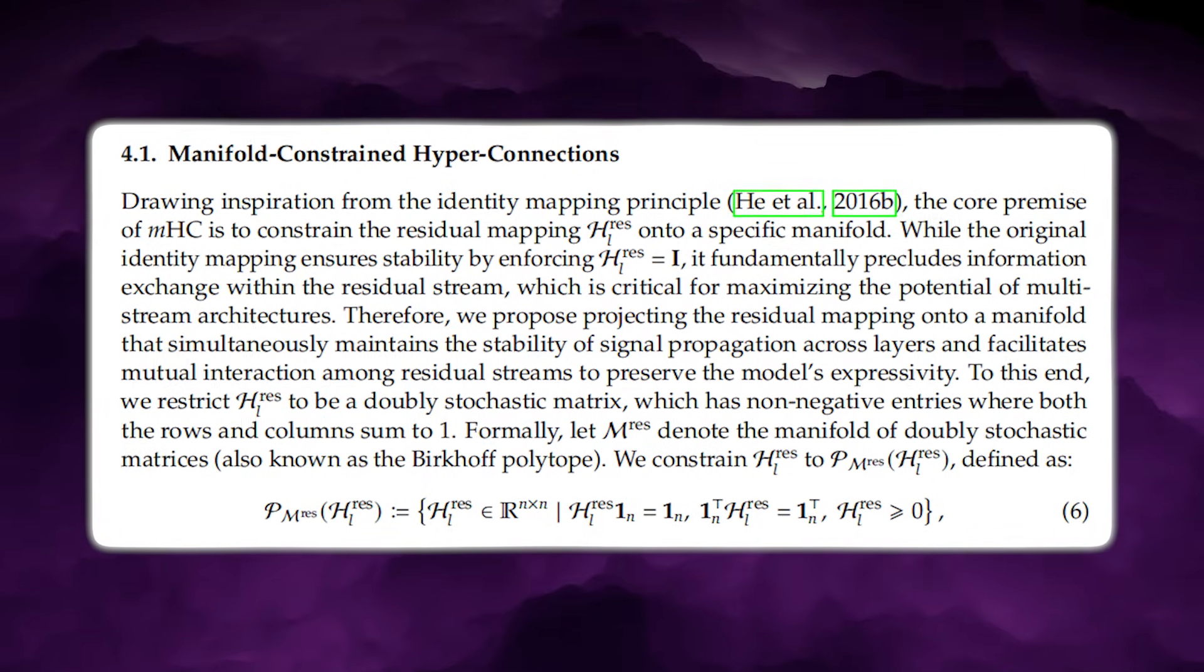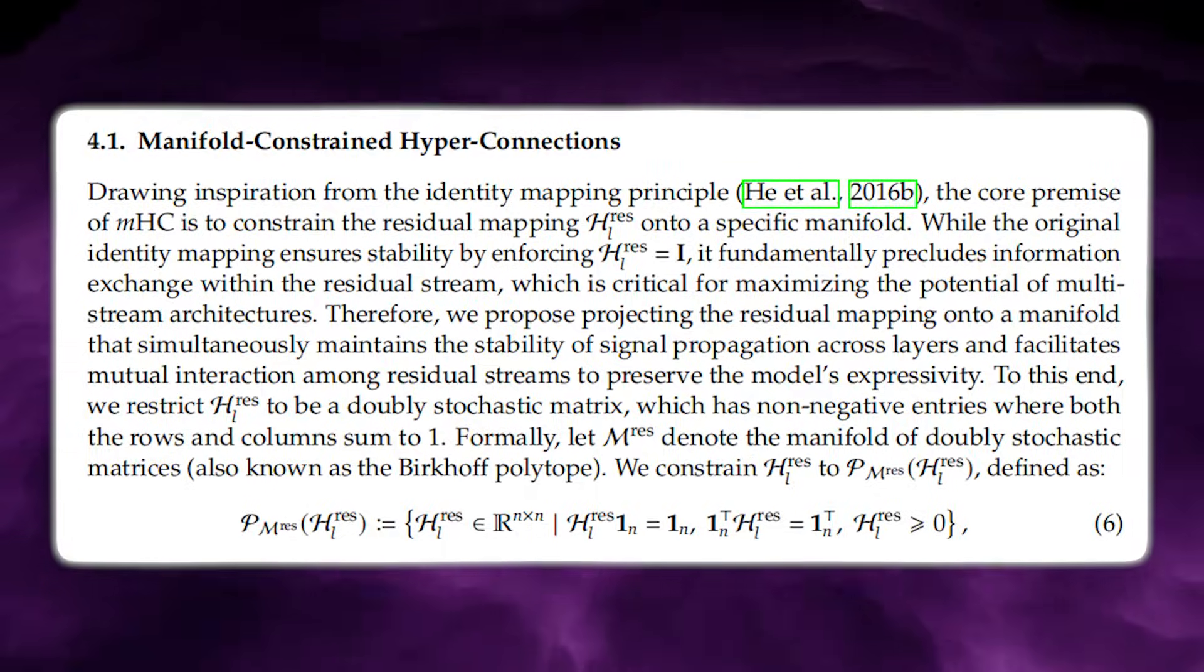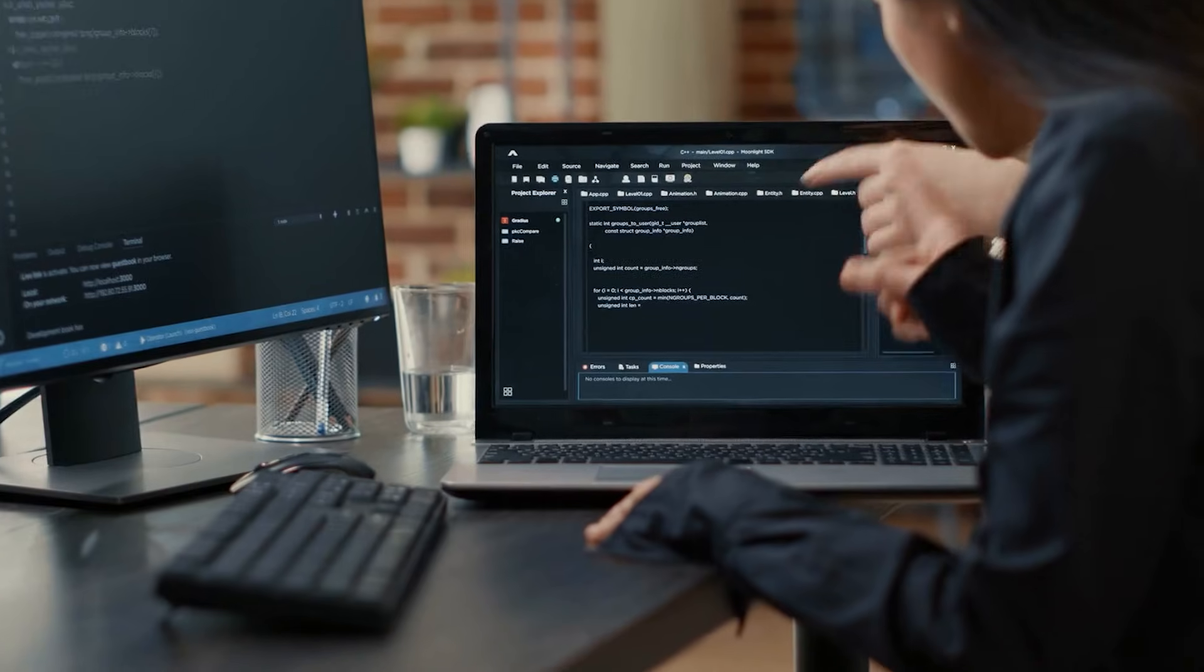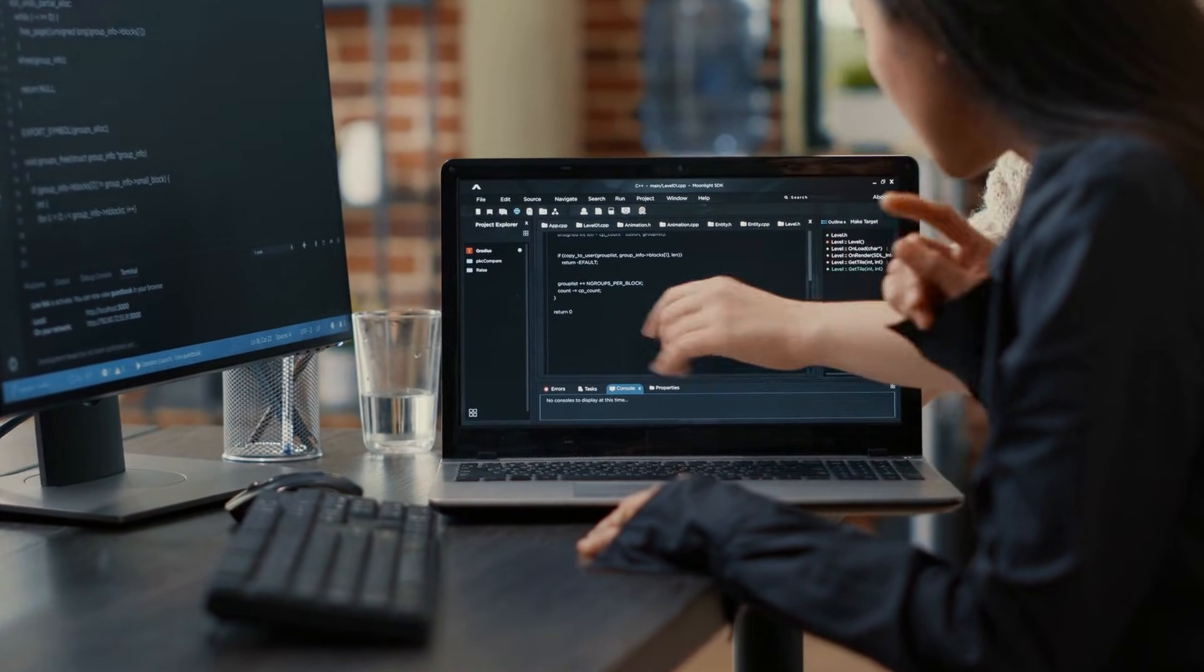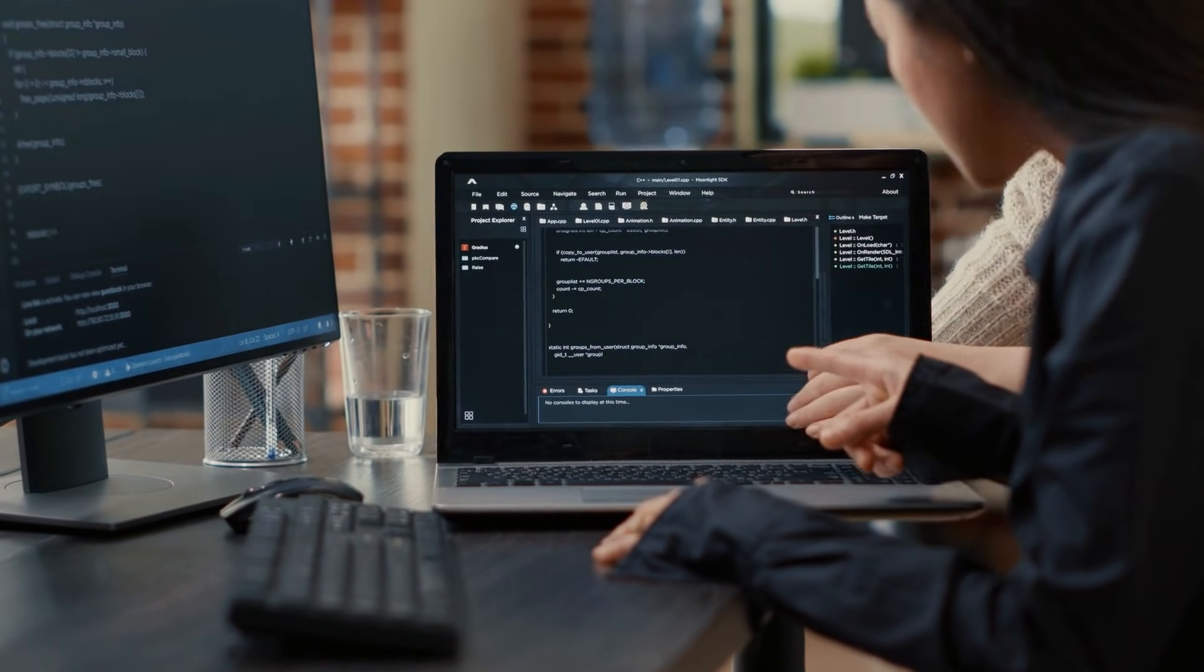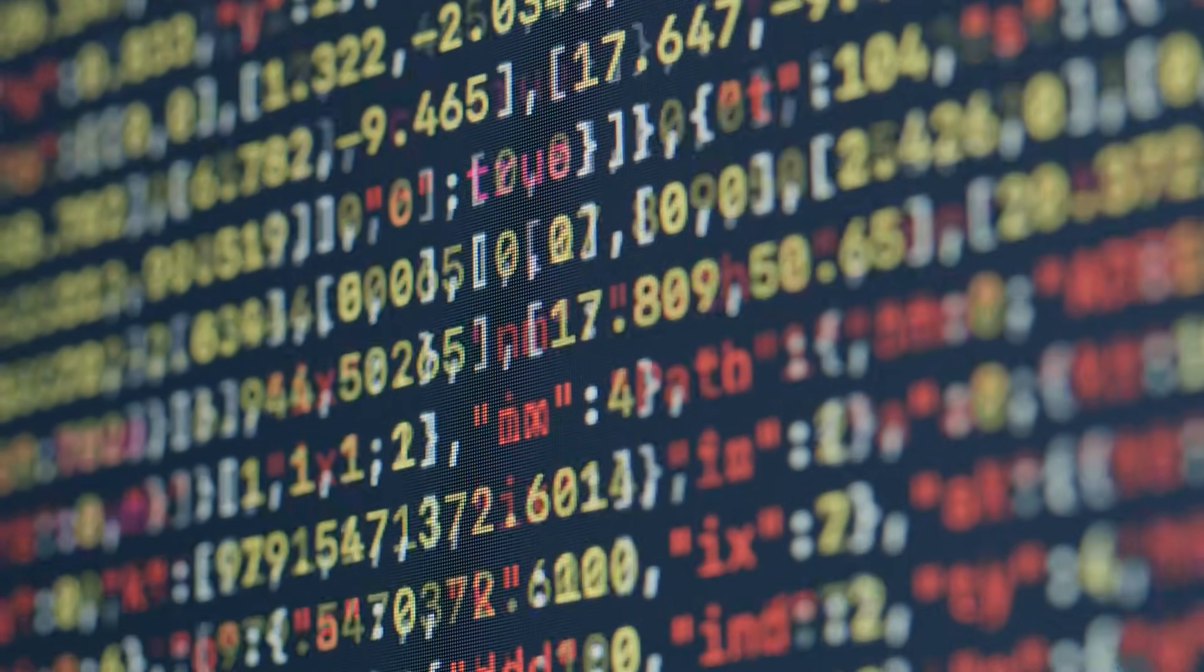But there was a catch. HC shortcuts were learned, not guaranteed. And stacking learned shortcuts without constraints is numerically dangerous. When layers multiply these learned mixing matrices repeatedly, the shortcut path stops behaving like identity. It can amplify signals thousands of times or shrink them into nothing. That breaks training at scale.